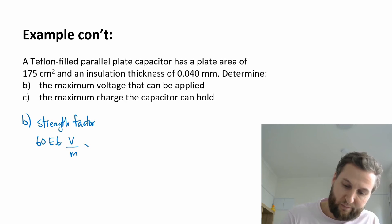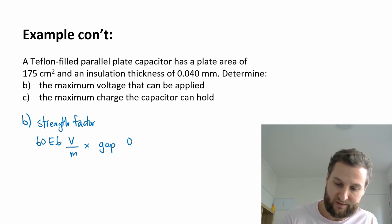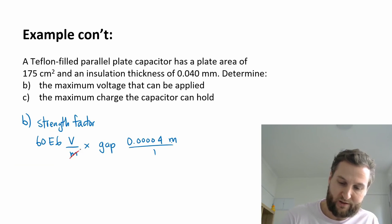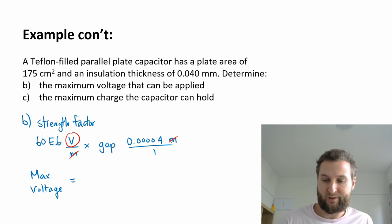60 times 10 to the 6 volts per meter. I can create an equation here with this. Volts per meter, if I multiply this by the gap, so my capacitor gap is 0.040 millimeters, in this case it's 0.00004 meters. That's kind of over 1. We can see in the equation that meters on the bottom cancel with meters on top and we're just left with volts.